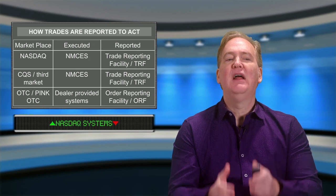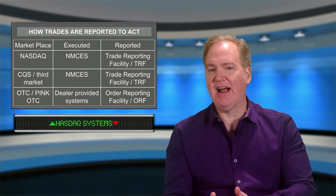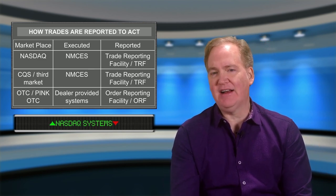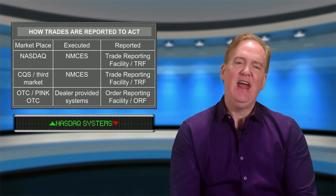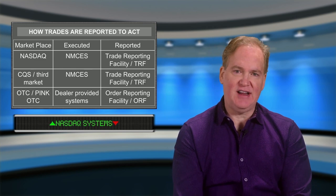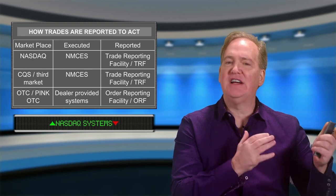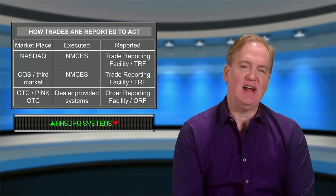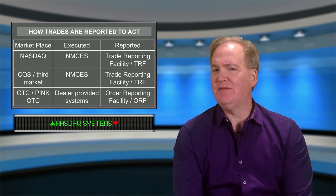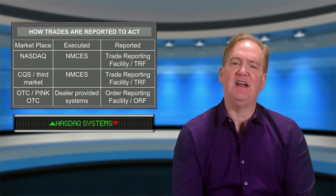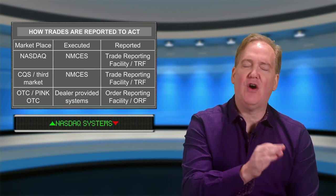How transactions are reported to ACT is contingent upon where the order was executed. If we're talking about a transaction in a NASDAQ stock — Microsoft, Amazon, Google — that order is executed in the NASDAQ Market Center execution system. The trade input function or user interface that reports that trade to ACT is the Trade Reporting Facility, or TRF. Think of this as an order screen where a trader inputs the details: buy or sell, stock, number of shares, price, side, etc.